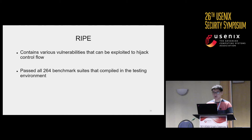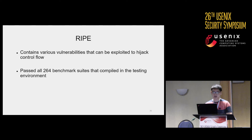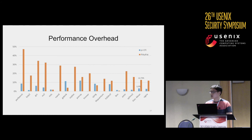We also ran the ROP testing benchmark, which contains various vulnerabilities that can be exploited to hijack control flow. For all 264 benchmarks compiled in our testing environment, we passed all of them — meaning we can detect all control-flow hijacking attacks provided by the benchmark. For performance overhead, on average our solution consistently incurs higher overhead than PI-CFI: around 12% for our solution versus around 3% for PI-CFI.